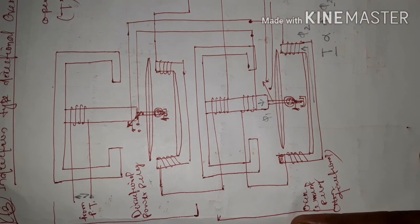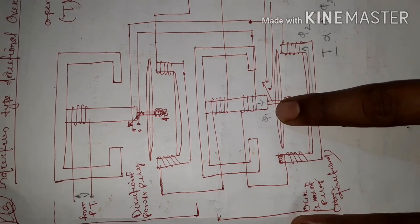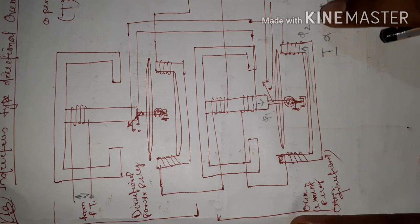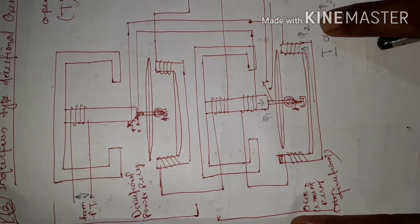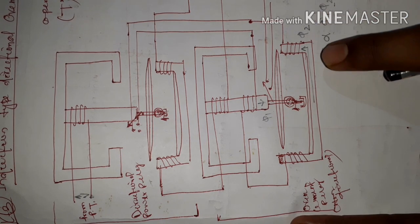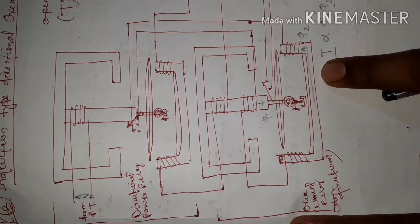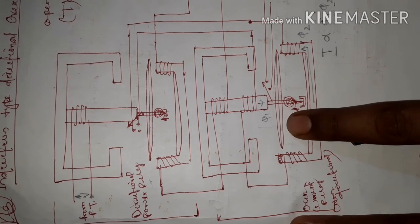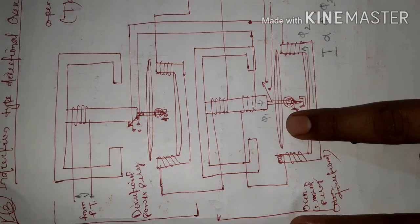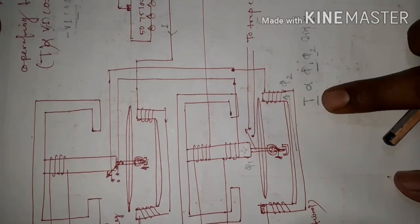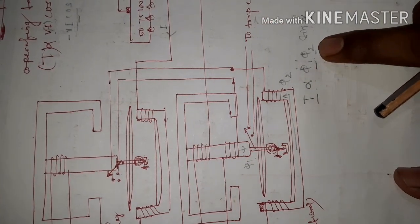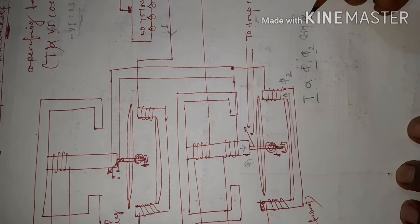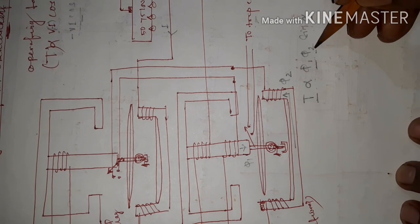When the directional power relay sends a signal to the overcurrent relay, two fluxes are developed. Flux φ1 is developed by the upper electromagnet, whereas flux φ2 is developed by the lower electromagnet. An operating torque is then developed on the aluminum disc, represented as T proportional to φ1·φ2·sin α, where α is the phase angle between φ1 and φ2.